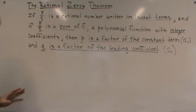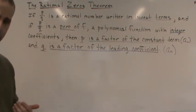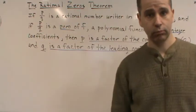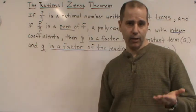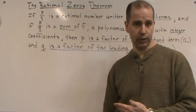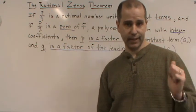So let me rephrase that. If you have a rational number in lowest terms, P over Q, and that rational number P over Q is a zero of a polynomial function, where the polynomial function has integer coefficients,